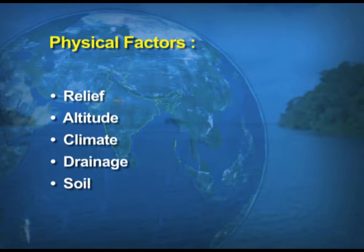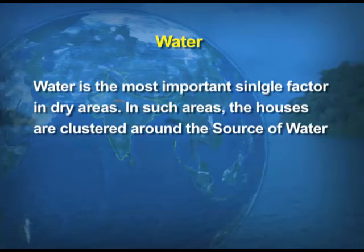Water is the most important single factor in dry areas — in such areas houses are clustered around the source of water. For example, in Rajasthan the compactness of settlements is determined by the source of water, as there is scarcity of water in that state. Settlements are generally found around a well, a pond, or any other water source.